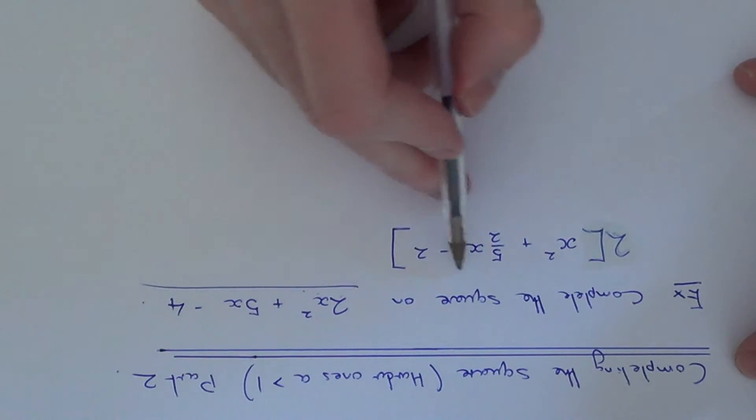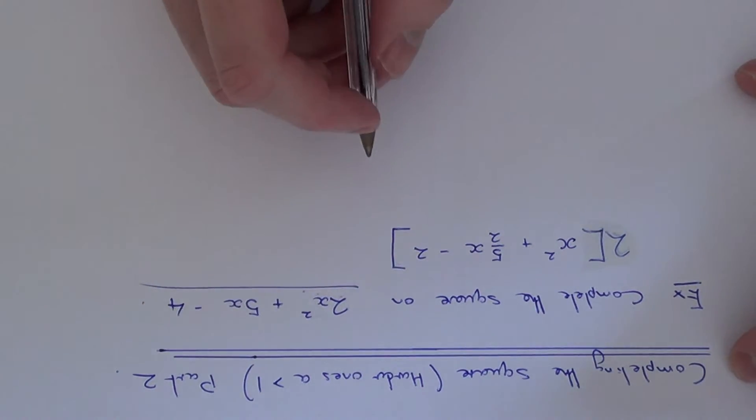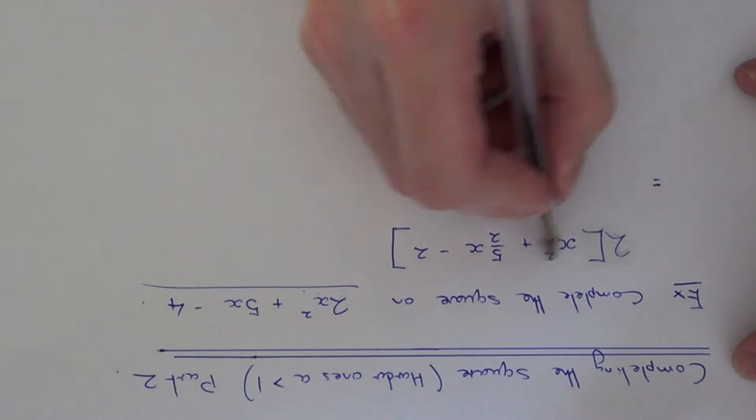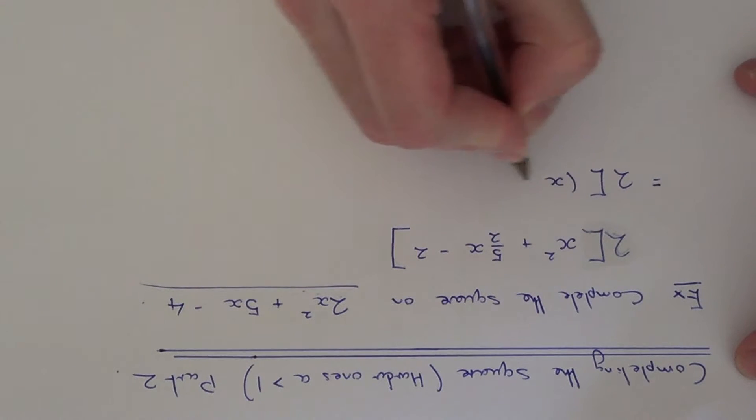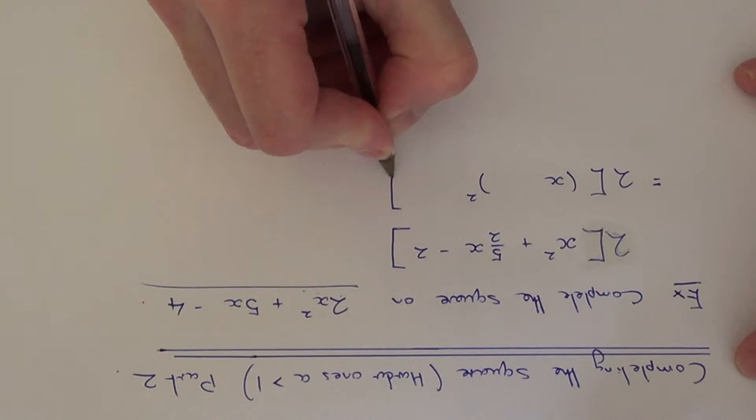So this expression that we have just worked out is the same as this one. We now need to do our normal method for completing the square on the bit inside the bracket. So if I just set it out like that.